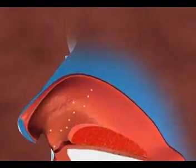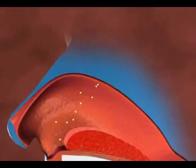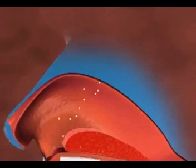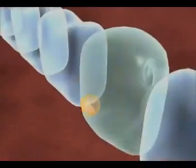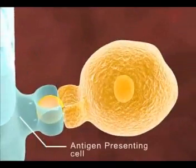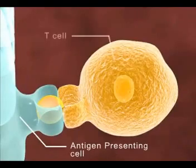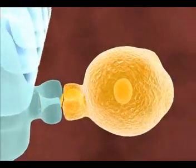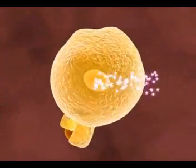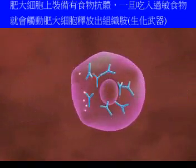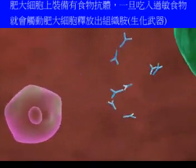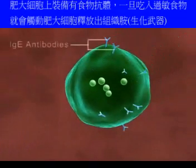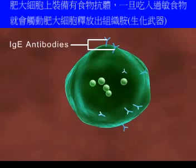On first exposure, the inhaled allergen enters the mucous membrane lining the nasal passages, where it is taken up by the antigen-presenting cell, which presents it to the T-cells. These T-cells activate the B-cells to release substances called IgE antibodies against the allergen.